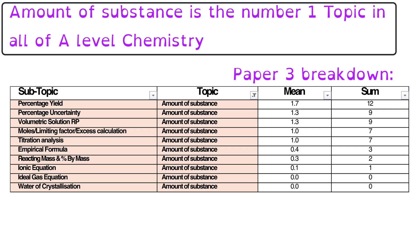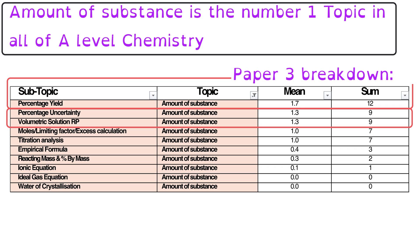Amount of substance carries the most marks across all of A-Level Chemistry and paper three is no exception, but there are definitely subtopics within it that are favoured more than others. Percentage yield is the most popular — usually tied to an organic synthesis or required practical. Percentage uncertainty can be asked about in any required practical, so it comes up frequently; not loads of marks, but very consistently. Making up a volumetric solution has come up a couple of times and been worth quite a lot of marks when it does. In fourth and fifth are moles and limiting factor, and titration analysis.